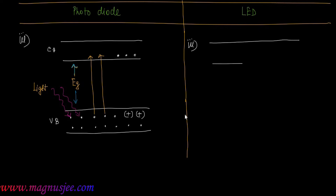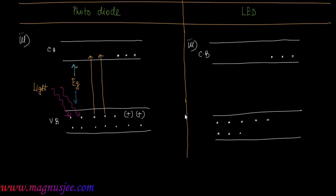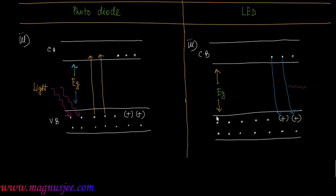For the LED, the energy band diagram also shows a conduction band with conduction electrons, and a valence band with a large number of valence electrons bound to the nucleus of the semiconductor, plus holes. The forbidden energy gap is E_g. Conduction electrons jump from the conduction band to the valence band at a certain applied voltage of the external battery, recombine with the holes, and light is emitted or radiated from the junction.